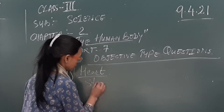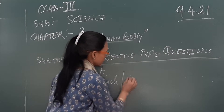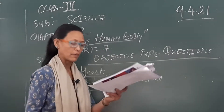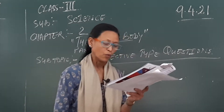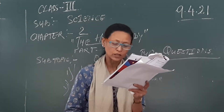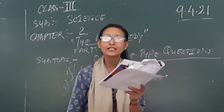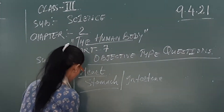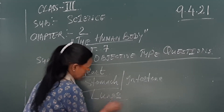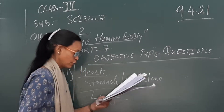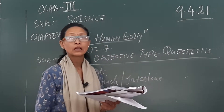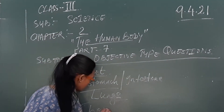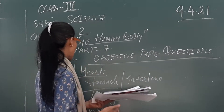Number two — digestive system. The digestive system is associated with which organ? You can write stomach or you can write intestine — either is fine, but stomach is best. Number three — respiratory system is associated with which organ? Respiratory system is connected with lungs. Number four — skeletal system is connected with bones.